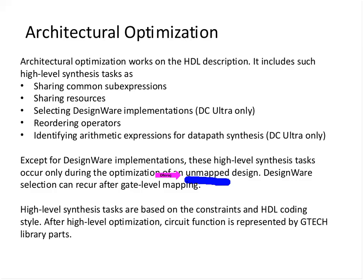However, DC might do some changes to the design and implementation even at the mapped netlist stage. Apart from those, all these optimization processes run at the GTECH level. High-level synthesis tasks are based on the constraints and HDL coding style. We have seen that we can force resource sharing at the RTL stage itself. Obviously our constraints will determine what design-ware implementation is selected. For example, if we have a very relaxed set of constraints - a very slow clock - then DC will use ripple adders because they are lower in area but slow. If our constraints are very aggressive, DC will use some other type of adder like carry lookahead or carry save.